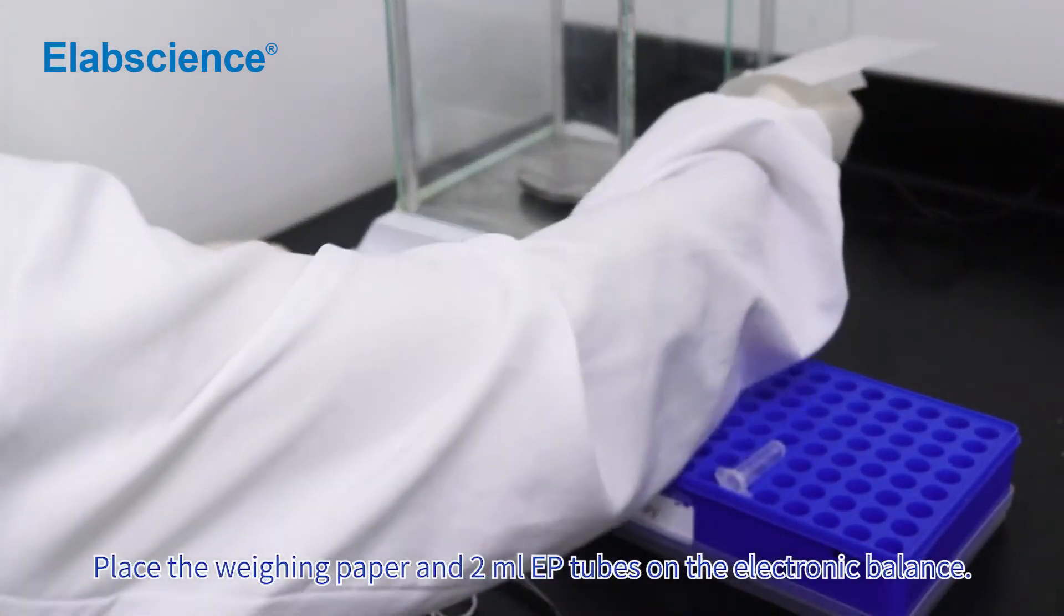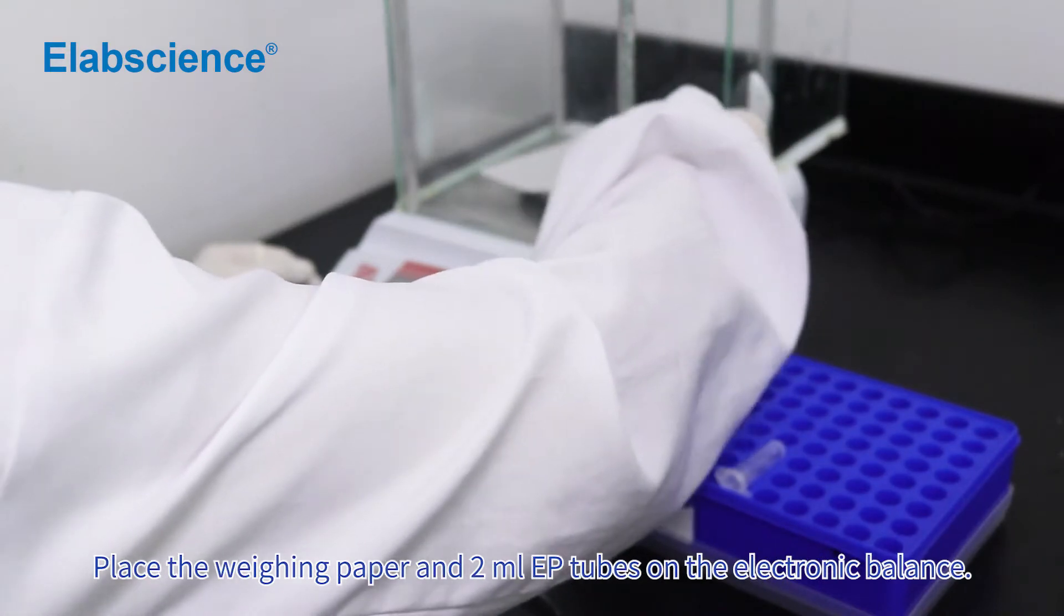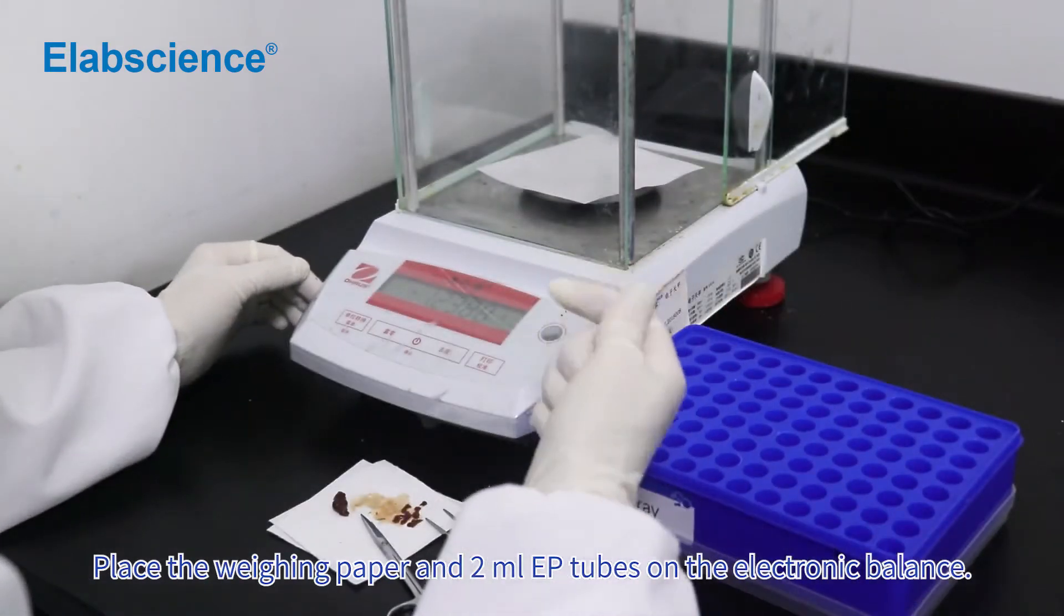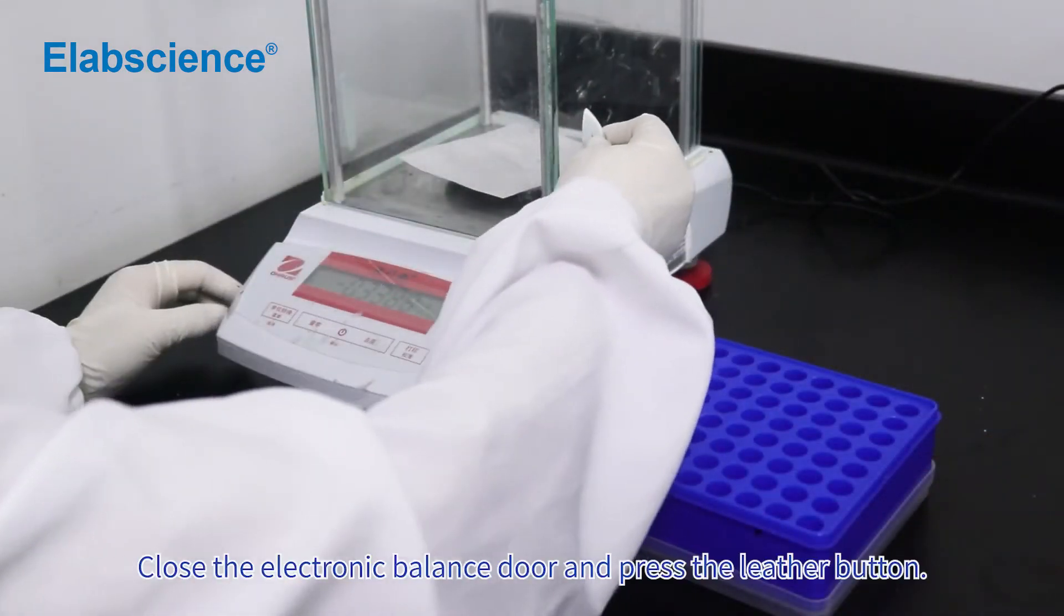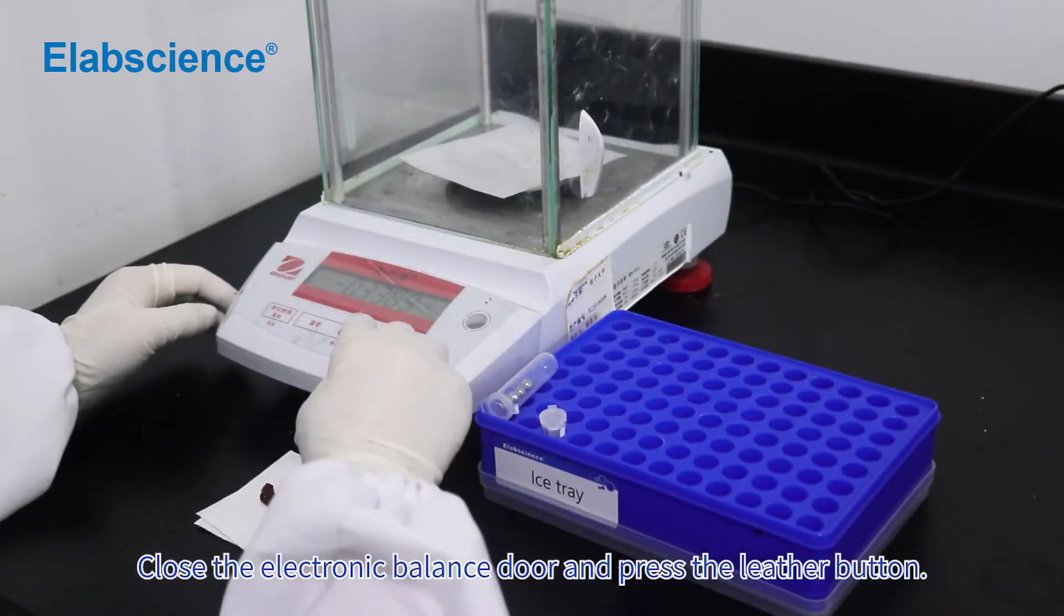Place the weighing paper and two milliliter EP tubes on the electronic balance. Close the electronic balance door and press the tare button.